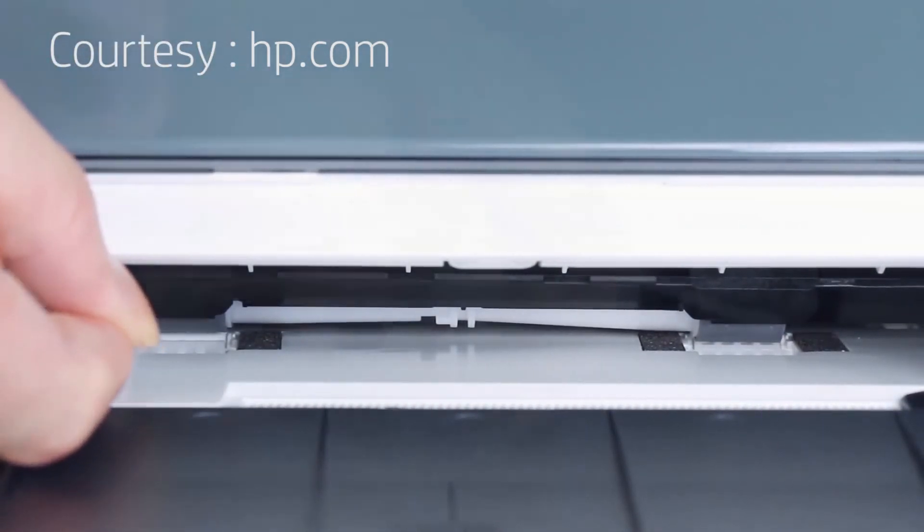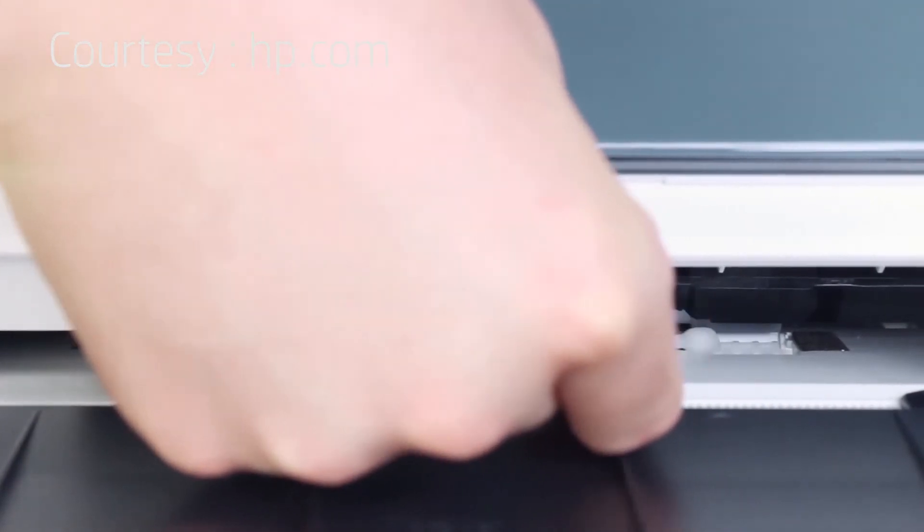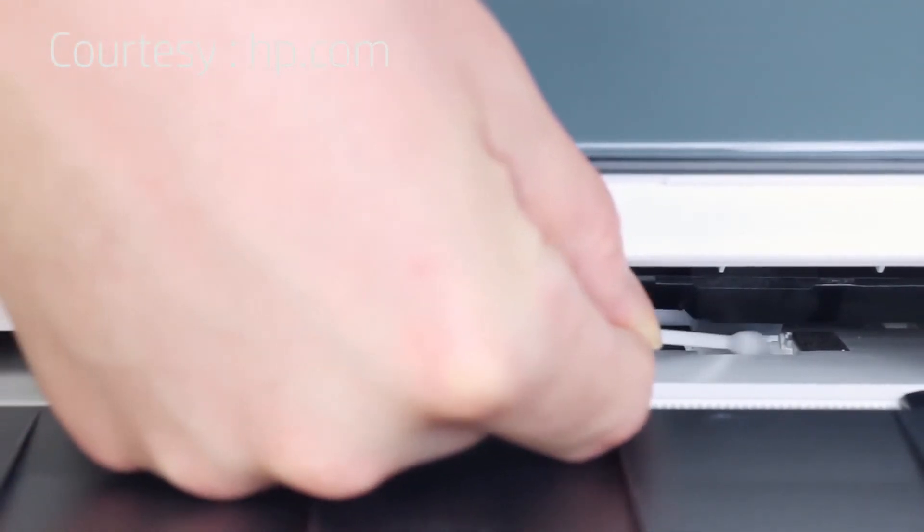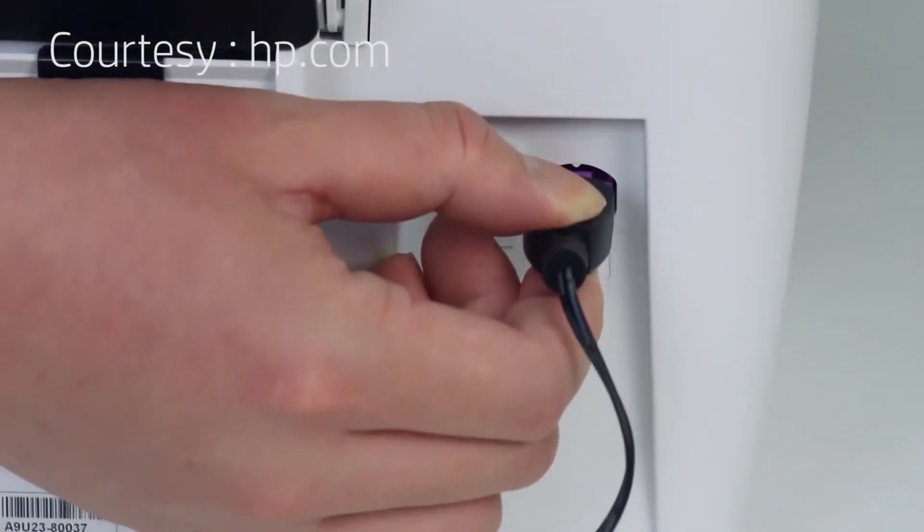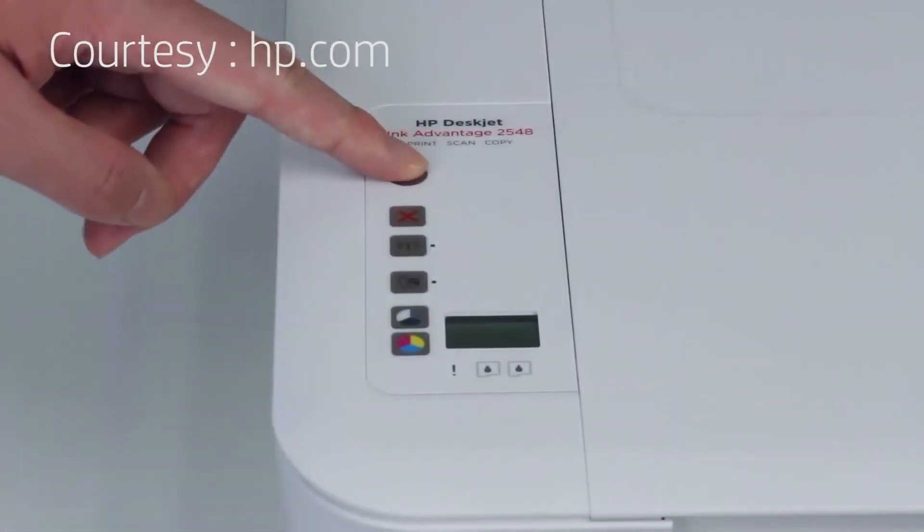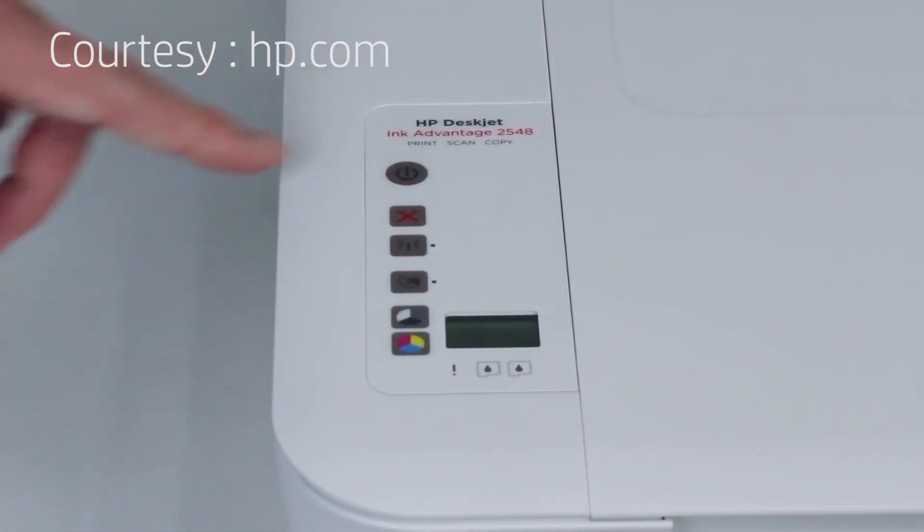Allow the rollers to dry for about 15 minutes. Reconnect the power cord, then press the power button to turn on the printer.